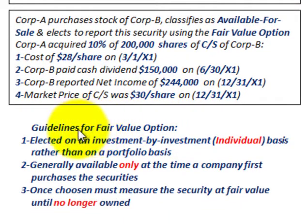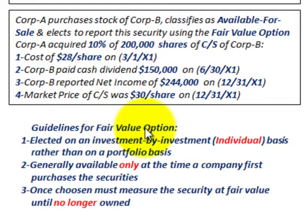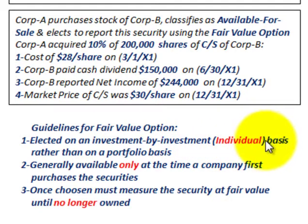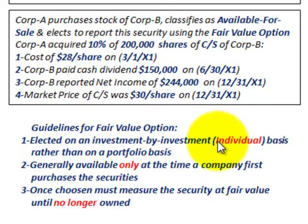Let's look at the guidelines for the fair value option. First, it's elected on an investment-by-investment basis, so we're looking at each security on an individual basis rather than a portfolio basis. Our example is only for one security, but with the fair value method you're generally looking at a portfolio. When you use the fair value option, you have to look at each security separately when reporting.